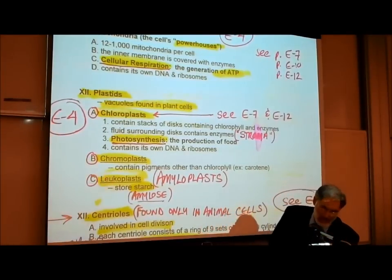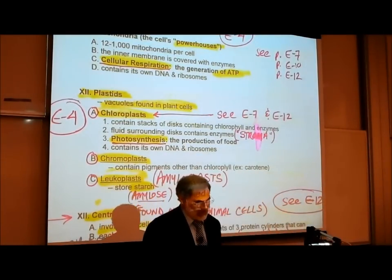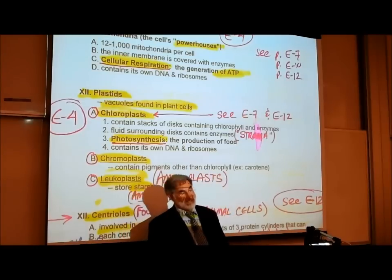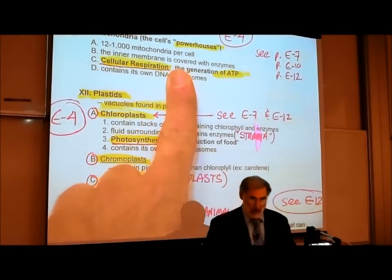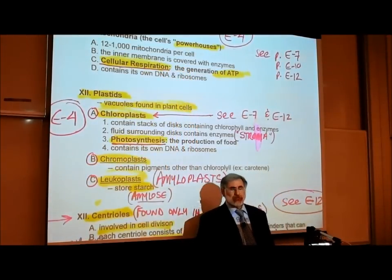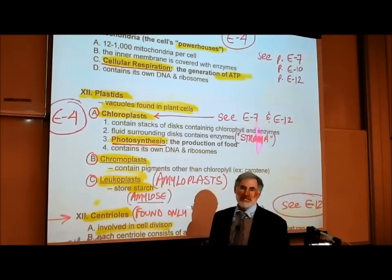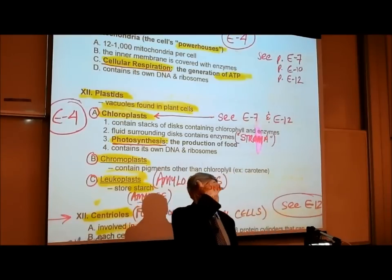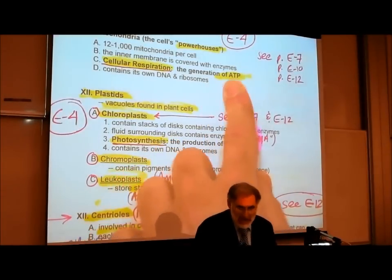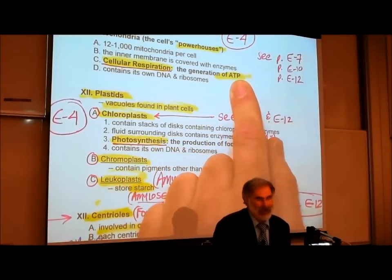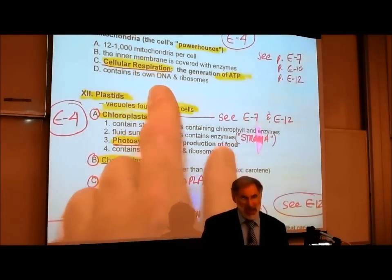That takes us to mitochondria. Mitochondria are found in both plant cells and animal cells, and they are nicknamed the powerhouses of the cell. What's going on inside the mitochondria is a process called cellular respiration, by which ATP — the gasoline of the cell — is produced. The production of this high-energy nucleotide called ATP occurs largely in the mitochondria.